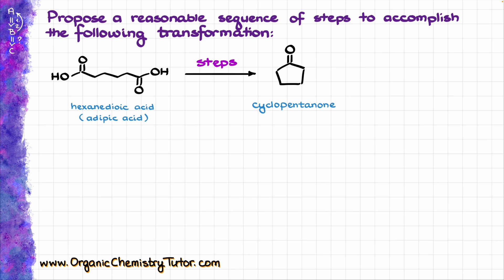Since I'm going from the open-chain molecule to a cycle, I know that the key step in this synthesis is going to be a cyclization reaction. Since we are working with carboxylic acids and carboxylic acid derivatives based on the functional groups in my starting material, the most likely reaction for my key step is going to be the Dieckmann condensation, which is essentially the same as the Claisen condensation but as an intramolecular version — so it's going to make a cycle. We also know that the Dieckmann condensation is the reaction of esters.